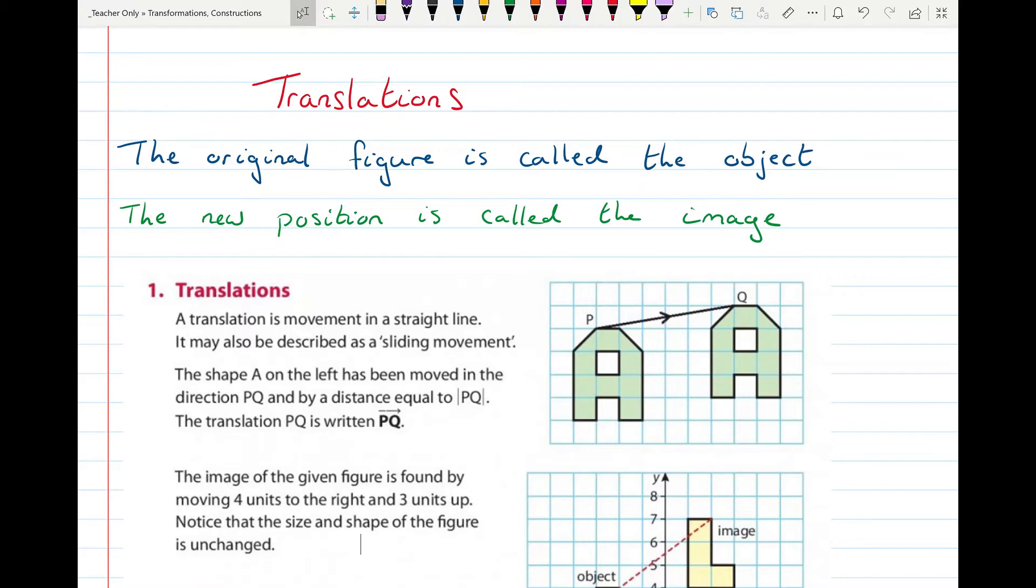The original figure you start off with is called the Object. So you start with an Object, and then once you move it, or rotate it, or do something to it, you get what's called the Image. So the Image is where it ends up. Just like if you're looking into a mirror, you are the Object, and the Image is what's appearing in the Mirror.